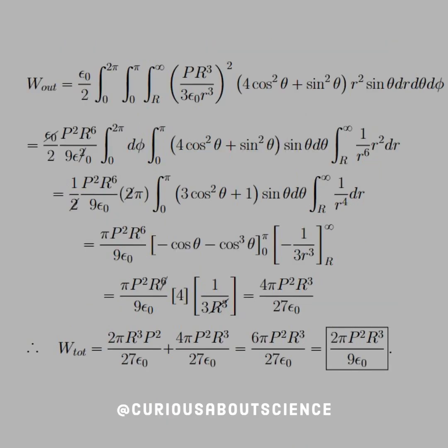Now, for outside, it's a little more work. Recall that with the R-hat and θ-hat dot products, we're left with squared terms with cosine and sine. So, we set up the same thing, but again, for our R integral, we have big R to infinity as our limit, not from 0 to big R.